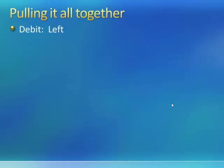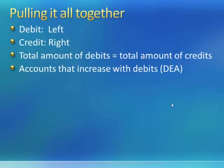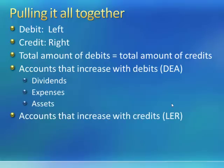So to review, we know that debit means left, and credit means right. We know that the total amount of debits must equal the total amount of credits. Accounts that increase with debits — remember our acronym DEA — dividends, expenses, and assets. And the accounts that increase with credits — remember our acronym LER — so we've got DEALER, D-E-A-L-E-R: liabilities, equity, and revenue.